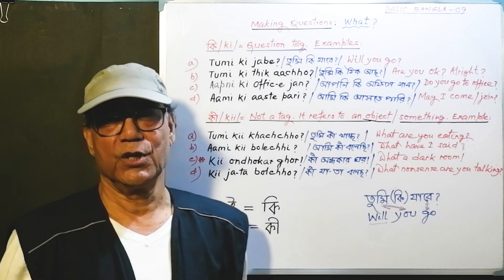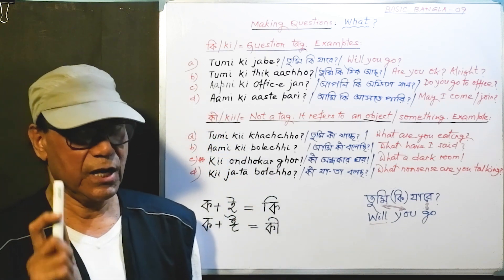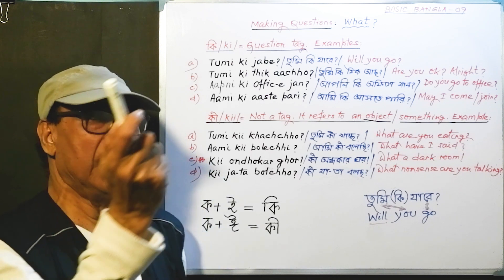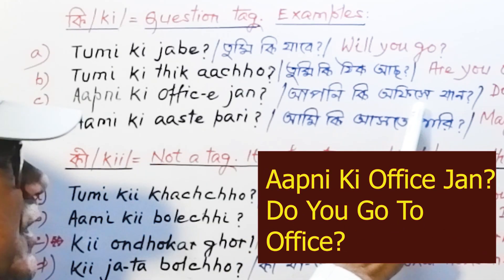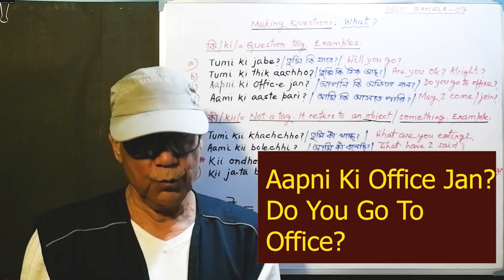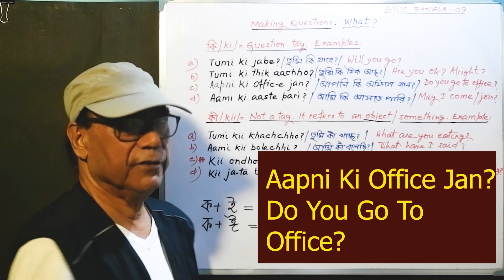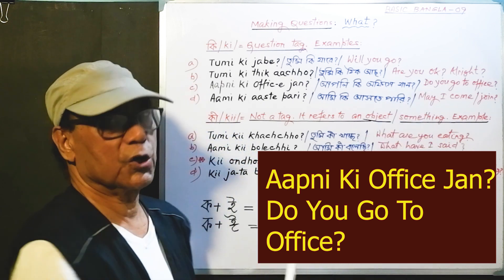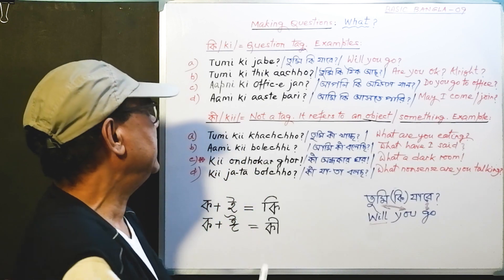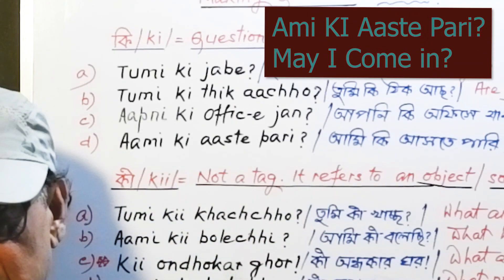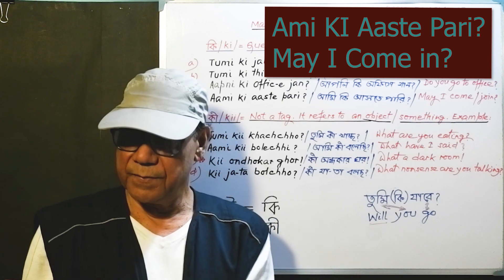Whenever you have answered yes or no, be sure that this ki is there. 'Apne ki office jaan?' means 'do you go to office?' — do is the auxiliary verb in English, but in Bengali, jaan, the verb, has the idea of the auxiliary combined. And finally, 'ami ki aste pari?' means 'may I come in?' or 'may I join?' May is the auxiliary verb in English, and 'aste pari' together convey that sense.